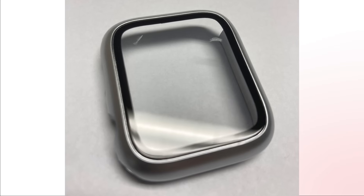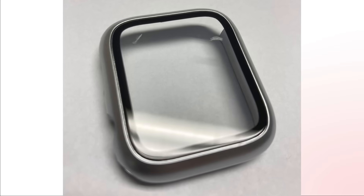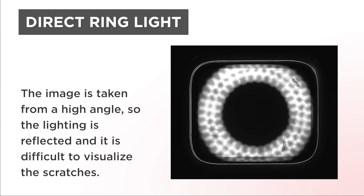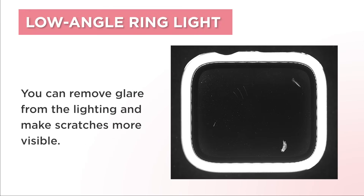Let's take an image of a scratch on a transparent smart watch cover. When imaging with direct ring lighting, the image is taken from a high angle, so the lighting is reflected and it is difficult to visualize the scratches. If you take an image using low angle ring lighting, you can remove glare from the lighting and make scratches more visible.